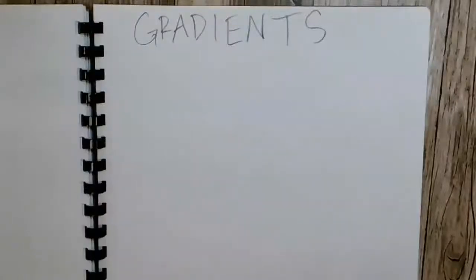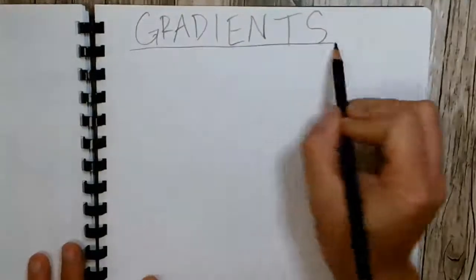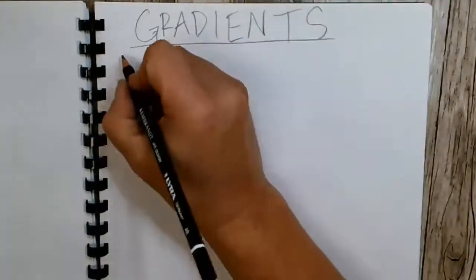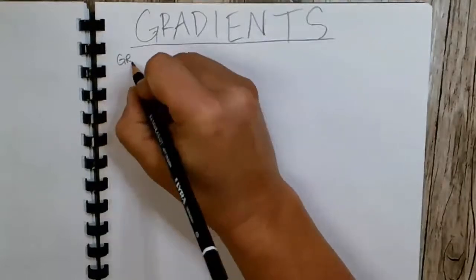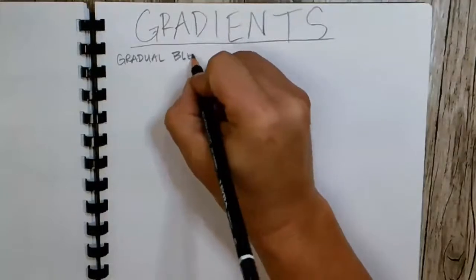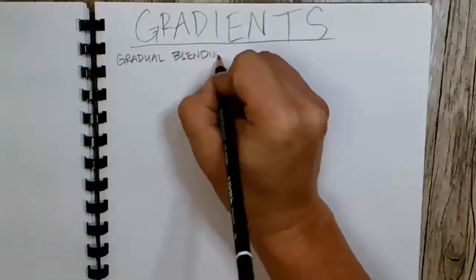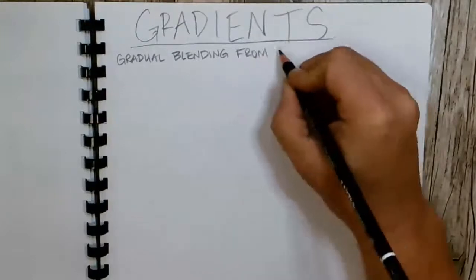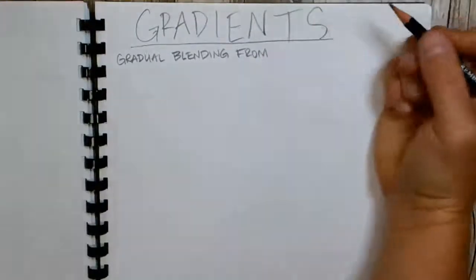We have gradients today and gradients are gradual blending from one value to another. Gradual blending from one value to another.